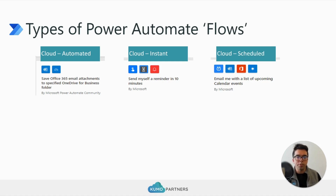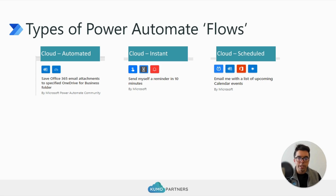The third type is pretty self-explanatory: a Scheduled Flow. These are ones you can program robustly — down to every hour, every day, every other Monday, Wednesday of the week. All of that logic is how you can create a Scheduled Cloud Flow.